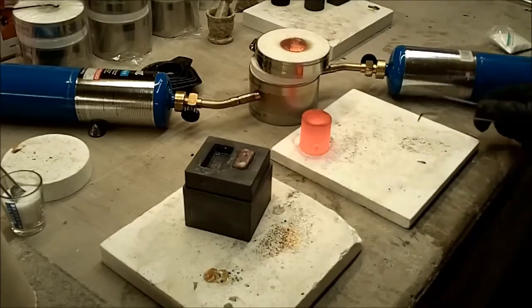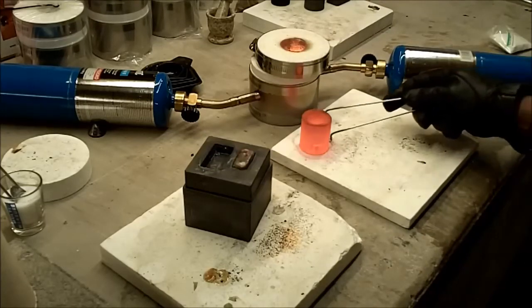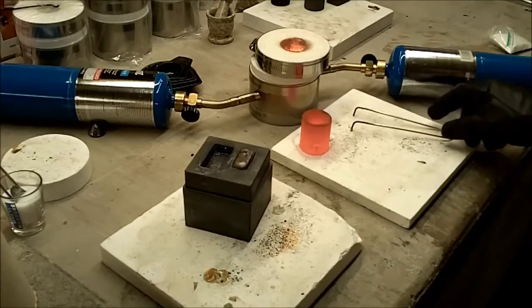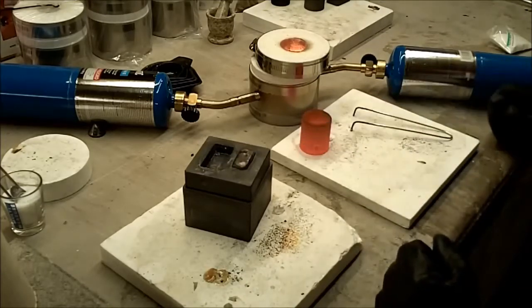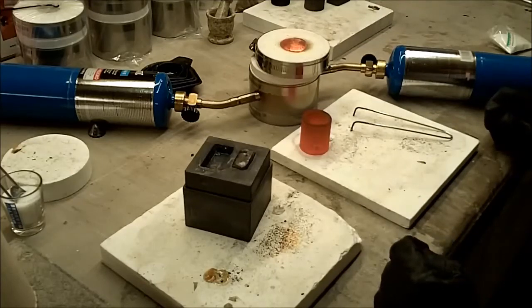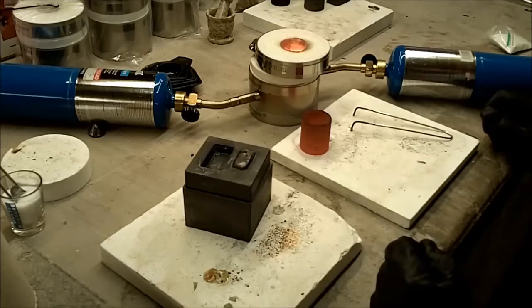As you can see, the crucible is glowing red hot, it's several hundred degrees. And our copper bar is starting to cool off here in our graphite mold. Once our mold cools off a little bit, I'll get a bigger set of tongs.